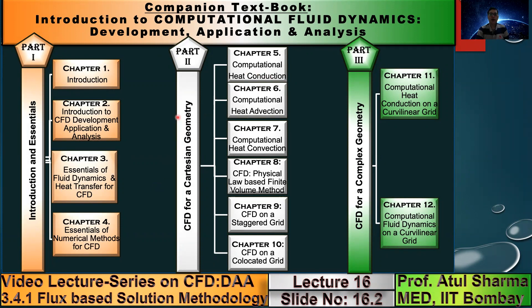We are in Part 2 of this lecture series, which corresponds to CFD for Cartesian geometry, where we are taking both uniform and non-uniform grids, starting with unsteady heat conduction.